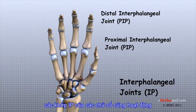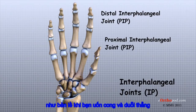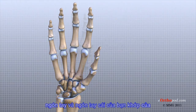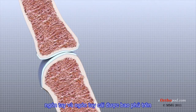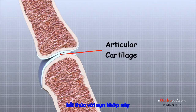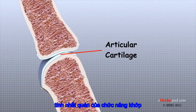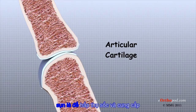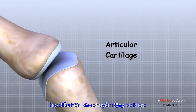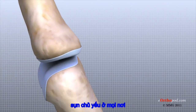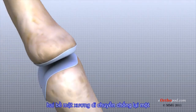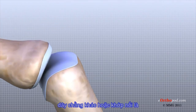The IP joints of the digits also work like hinges when you bend and straighten your fingers and thumb. The joints of the hand, fingers, and thumb are covered on the ends with articular cartilage. This white shiny material has a rubbery consistency. The function of articular cartilage is to absorb shock and provide an extremely smooth surface to facilitate motion. There is articular cartilage essentially everywhere that two bony surfaces move against one another or articulate.